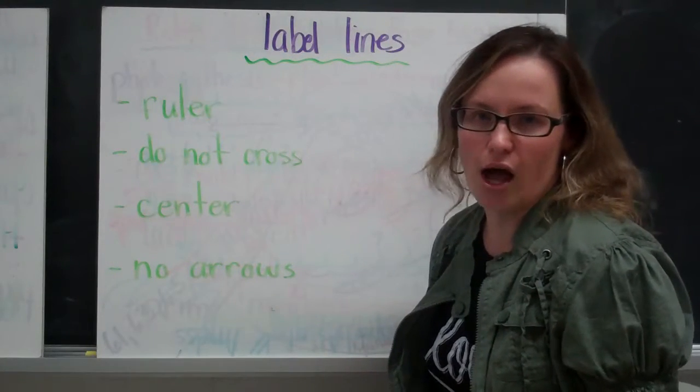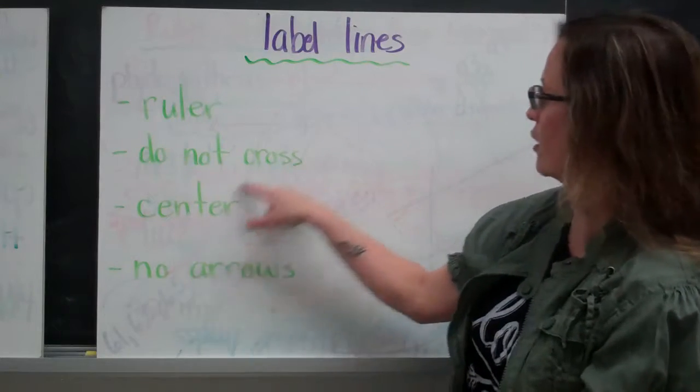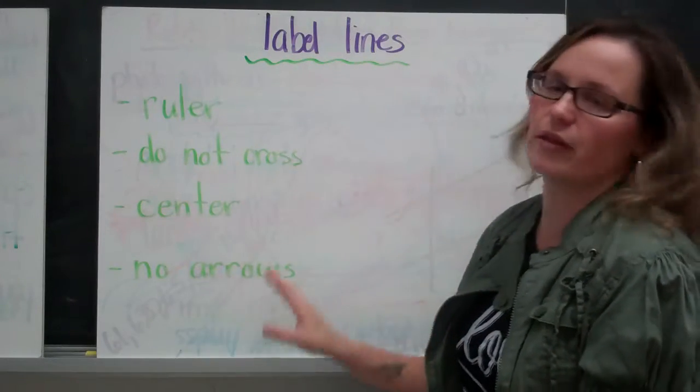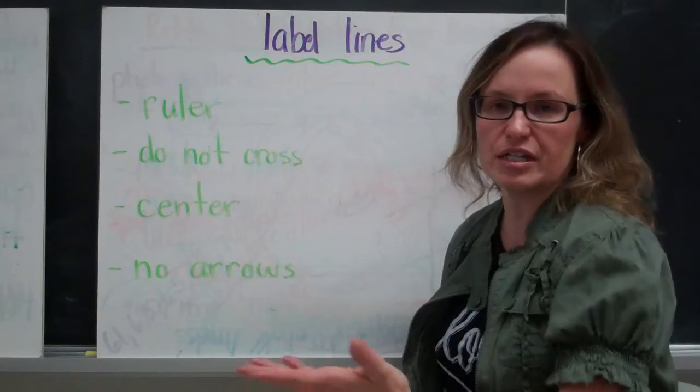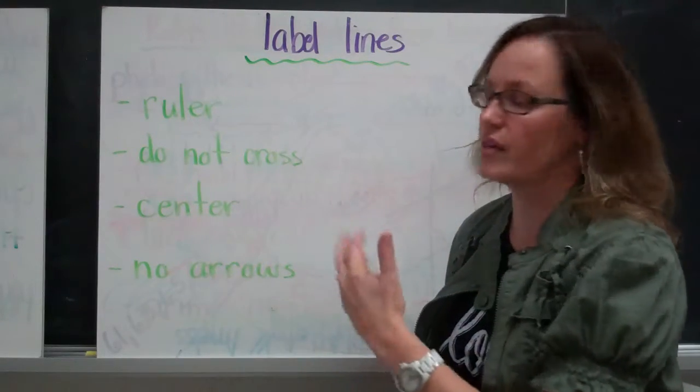Label lines should never cross. There should never be a line going this way and a line going this way and the lines crossing. The label line should always go to the center of whatever detail you are labeling on the illustration.